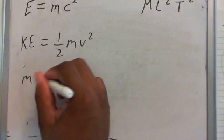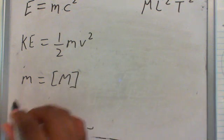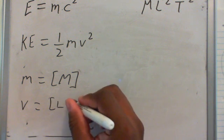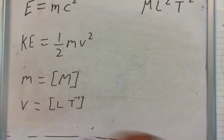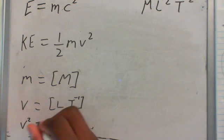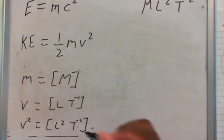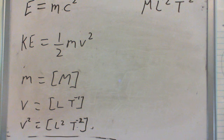We know that M equals M in brackets, dimensions. And the V is L over T. And as before, it's squared, so it would be L squared over T squared.